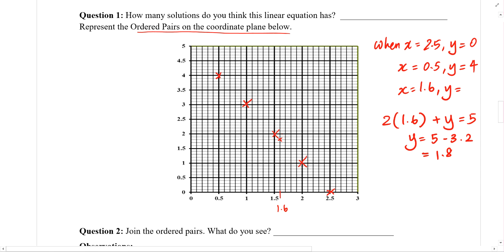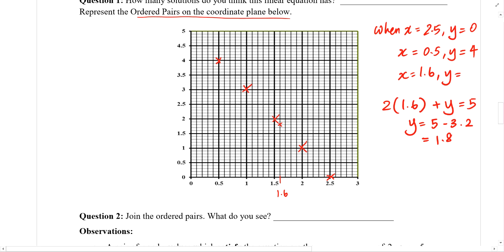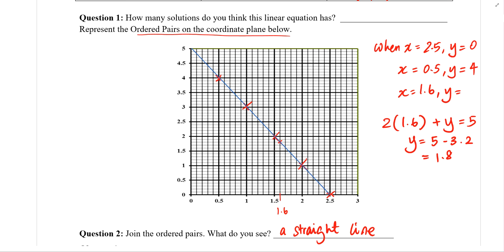So we've got many, many more crosses. In fact, we can draw even more, come with even more ordered pairs. If we were to join them up, what do you think you will see? What does this shape give you? It gives you a straight line. It gives you this straight line in blue colour.